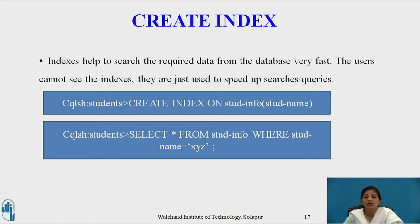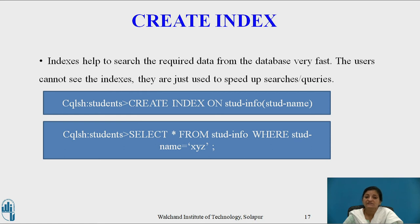Since role_number is already specified as a primary key, we need to first create an index on student_name, and then use it for querying. The syntax is: CREATE INDEX ON student_info (student_name), where student_info is the table name and student_name is the column. Now we can query: SELECT * FROM student_info WHERE student_name = 'xyz', which immediately locates and displays the full record of that student.